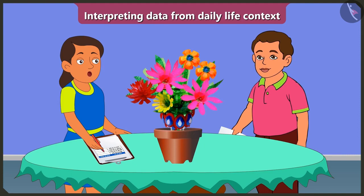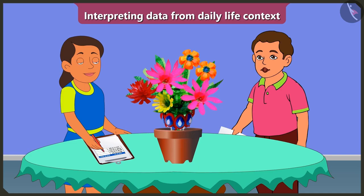Now I will fill this table by counting how many and which color plastic flowers are there in this flower vase. Pink flowers — one, two. Hey Bubbly, you don't need to count these flowers. Look, I have filled the data about the flowers which are in the flower vase.